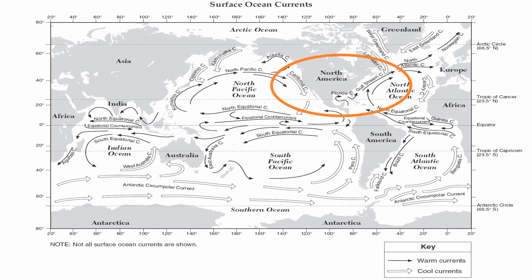If you look at North America and South America, you'll notice that those two continents have cold water currents on their west coast and warm water currents on their east coast. This means your west coast and east coast are going to have dramatically different climates, because cold water brings cold air and warm water brings warm air. So you'll have significantly different climates on the east coast and west coast of North America and South America.